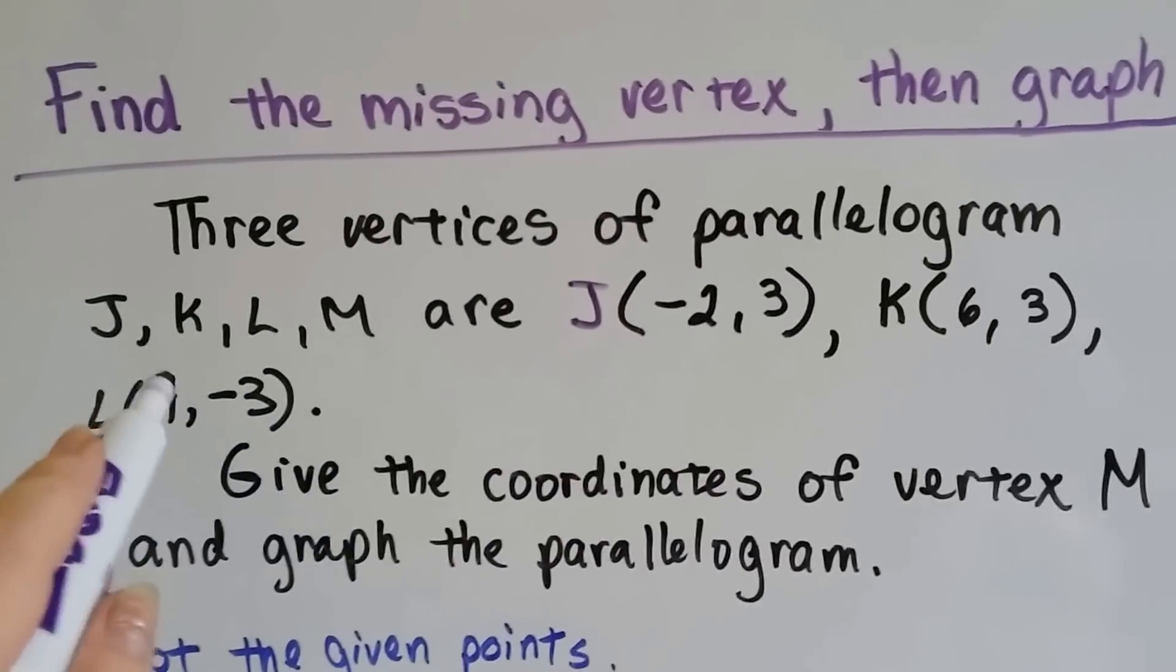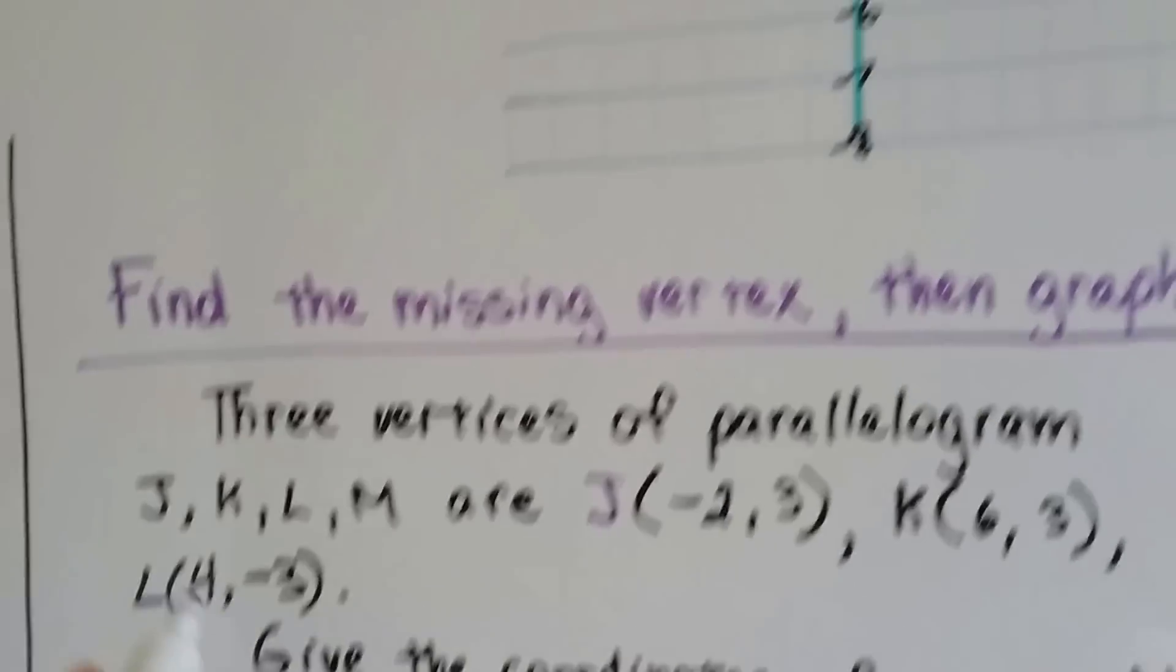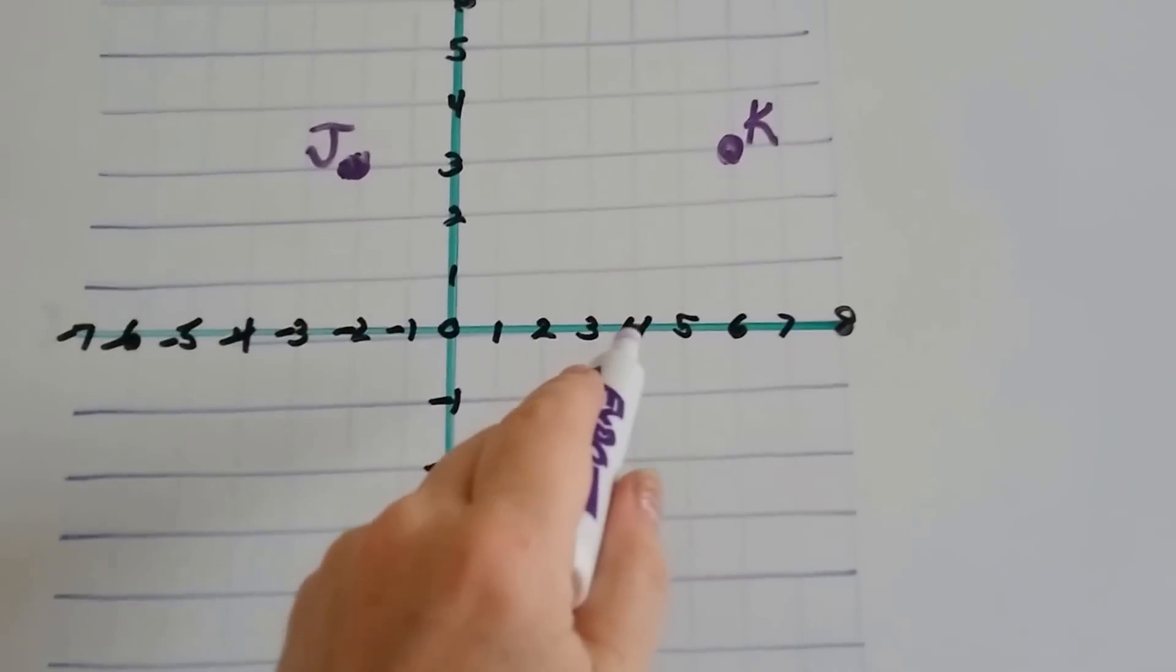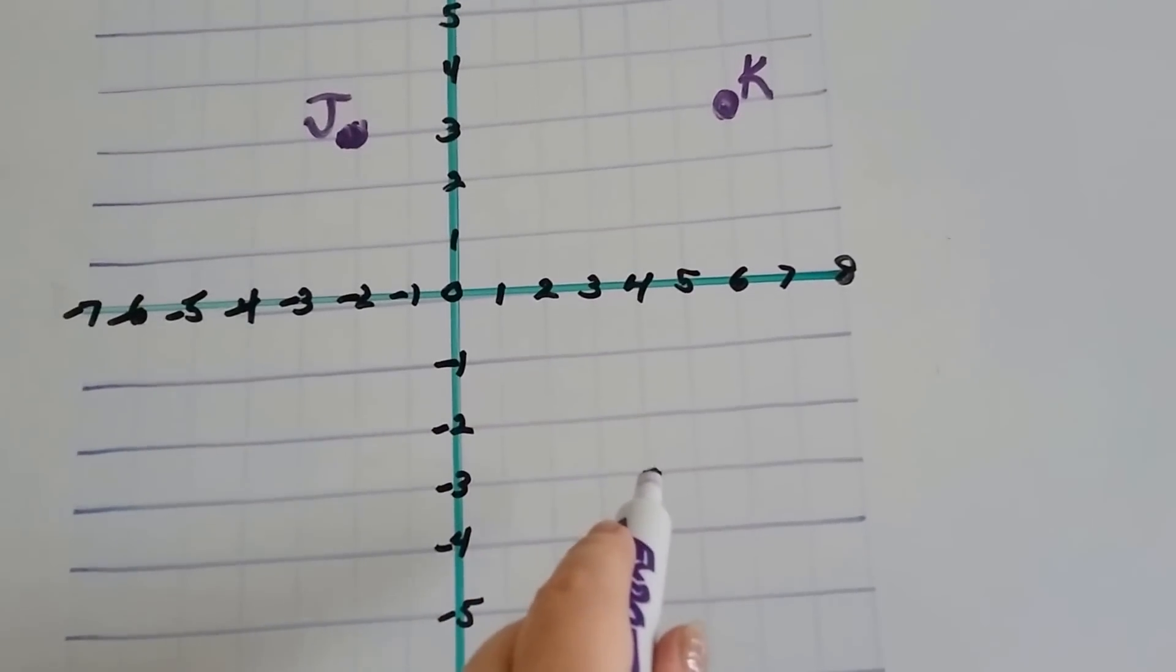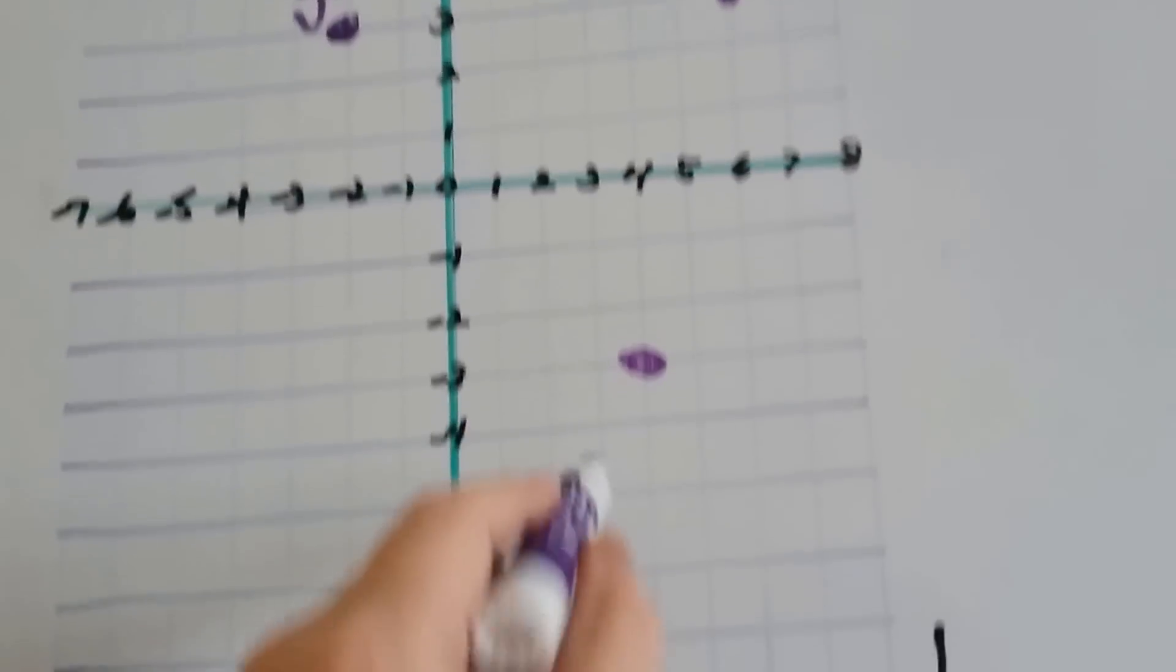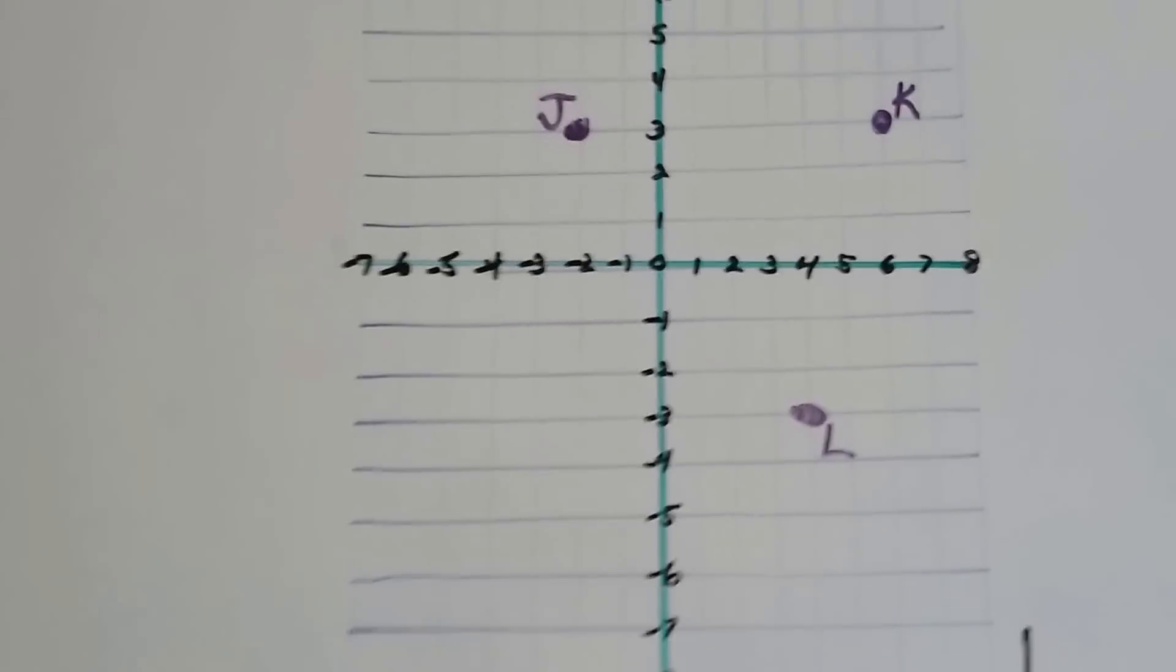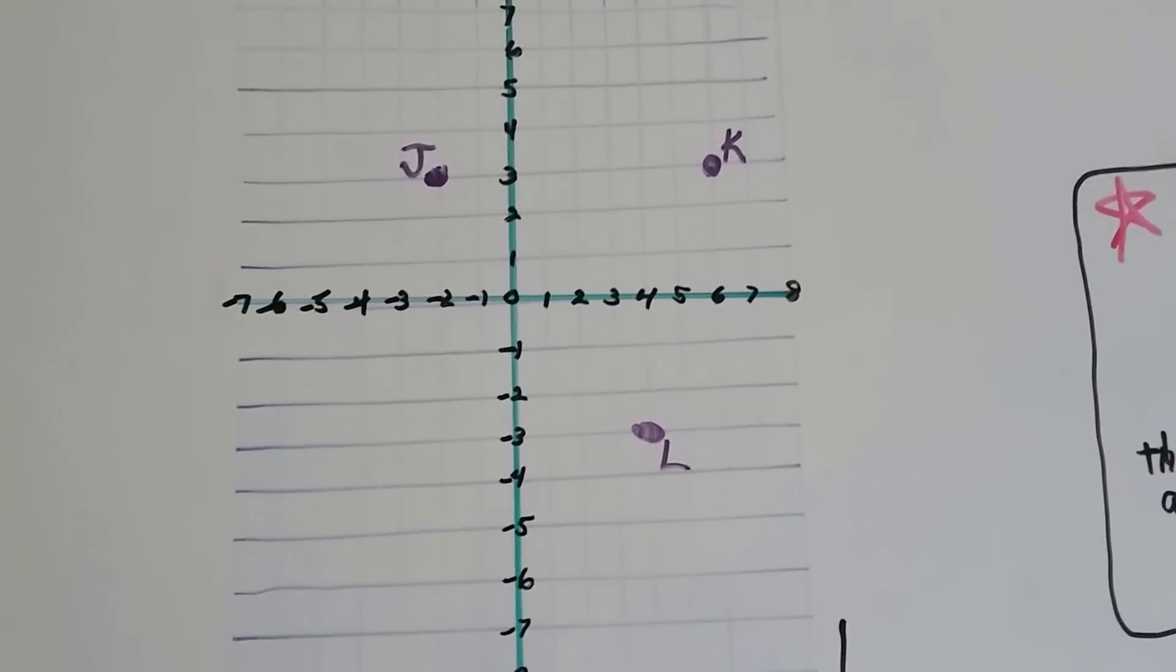And then L is 4 on the x and negative 3 for y. So, it's 4 for the x but negative 3 for the y. So, it's down here. And that is point L.